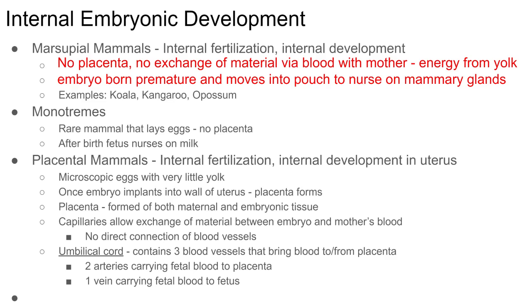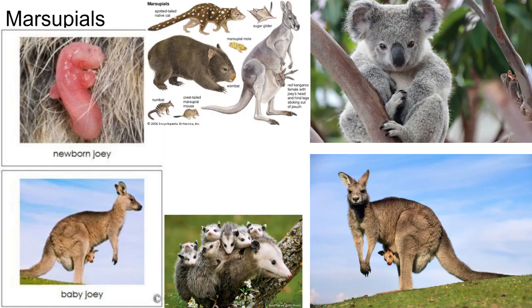In the beginning stages of embryo development, all the major organs and organ systems are forming. If there are toxins or dangerous substances reaching the embryo during that time, they can have serious impacts on its health and development. That's why it's important for women to know when they're pregnant, avoid certain things, and eat a healthy diet, since the growing embryo needs a lot of nutrition.